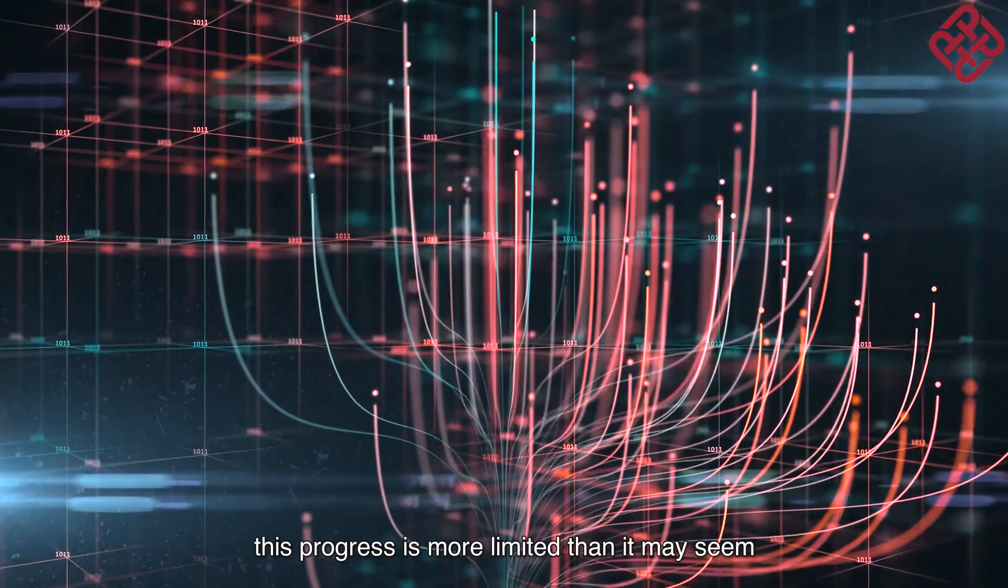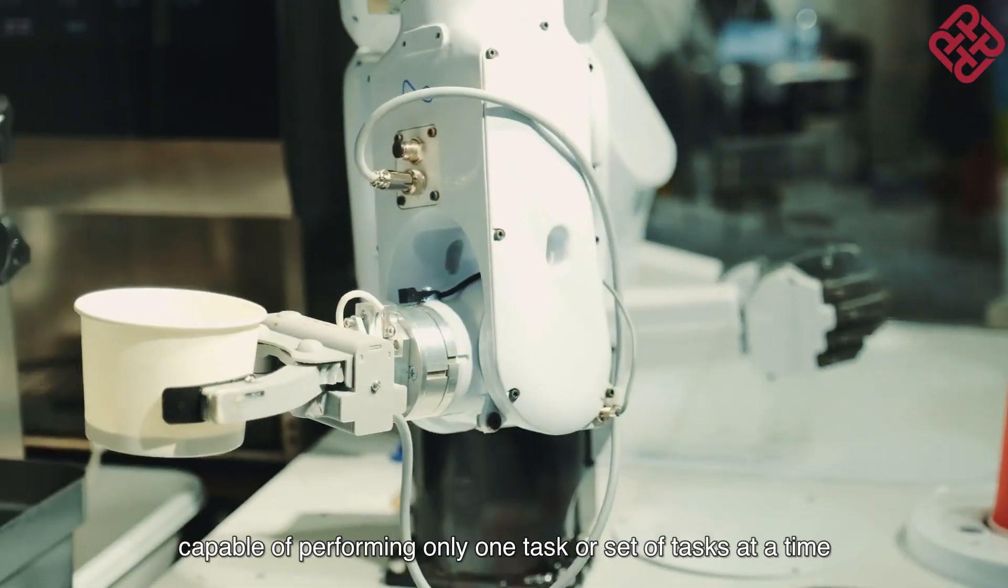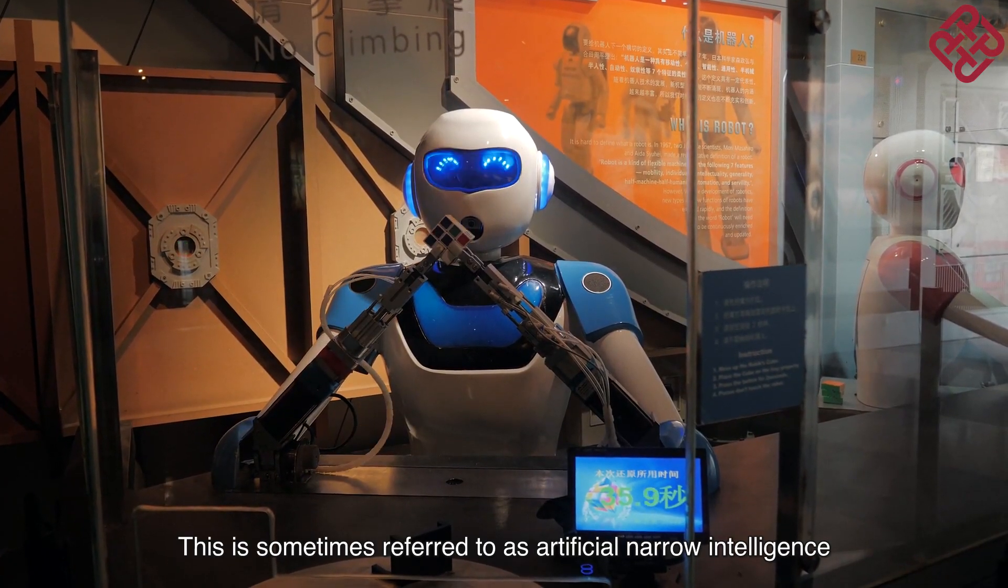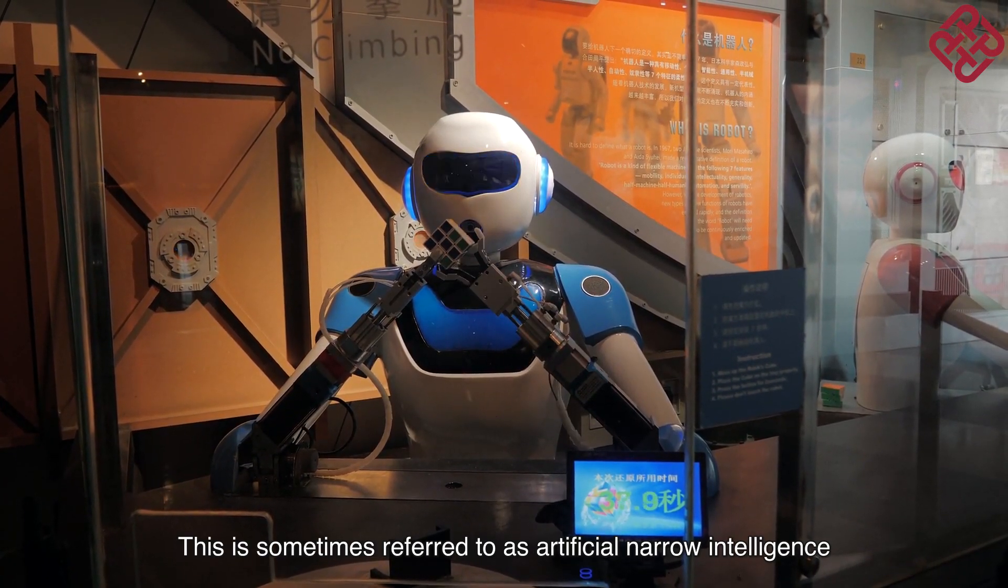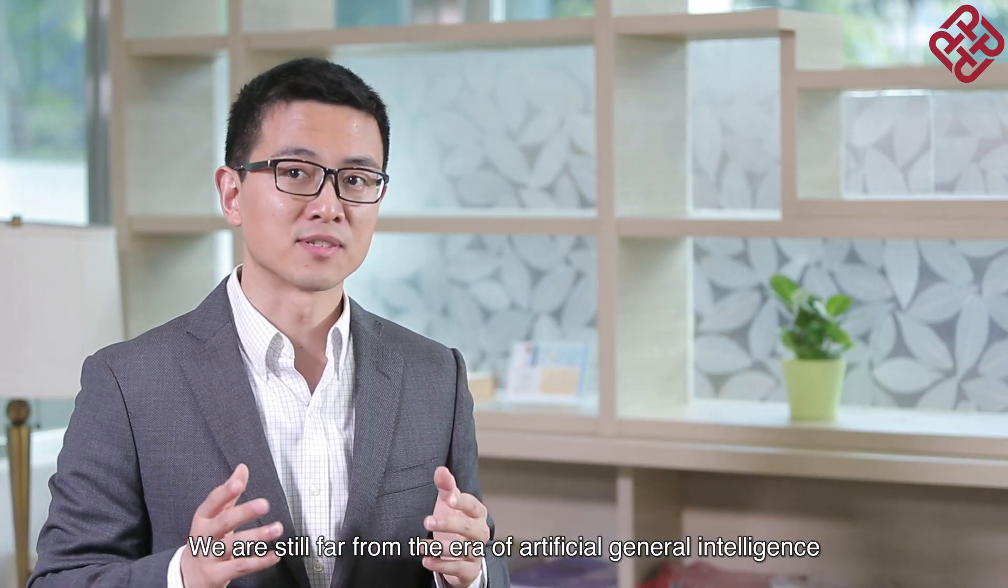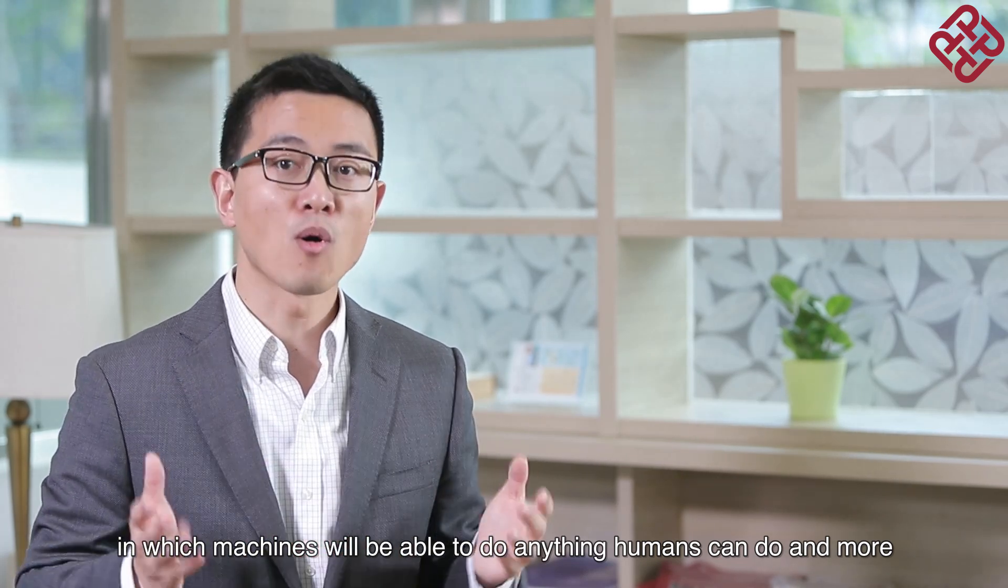However, this progress is more limited than it may seem. AI today is still a one-trick pony, capable of performing only one task or set of tasks at a time. This is sometimes referred to as artificial narrow intelligence. We are still far from the era of artificial general intelligence, in which machines will be able to do anything humans can do and more.